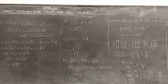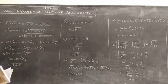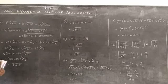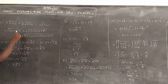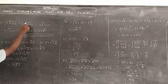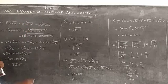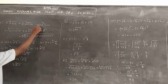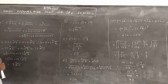Question number 4: 5 cube root of 40 plus 2 cube root of 625 minus 3 cube root of 320.